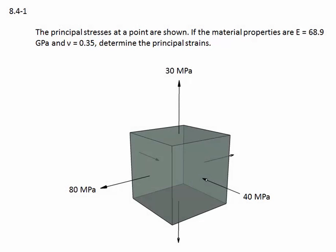Problem 8.4-1. The principal stresses at a point are shown. If the material properties are modulus of elasticity equal to 68.9 gigapascals and Poisson's ratio equal to 0.35, determine the principal strains.